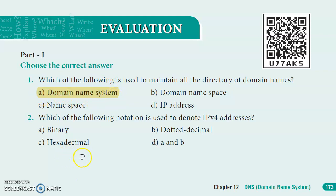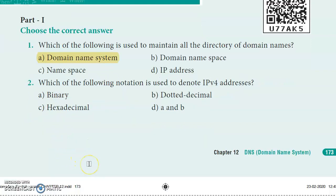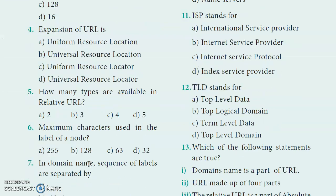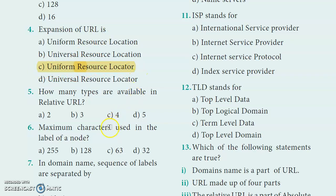Second question. Third question: What is the expansion of URL? The answer is option C - Uniform Resource Locator.